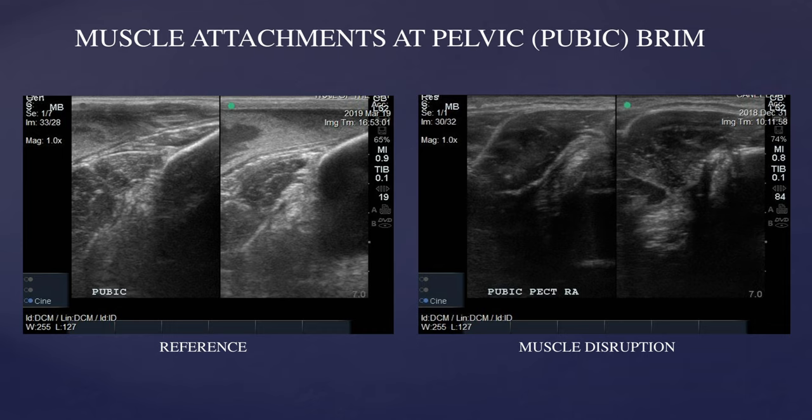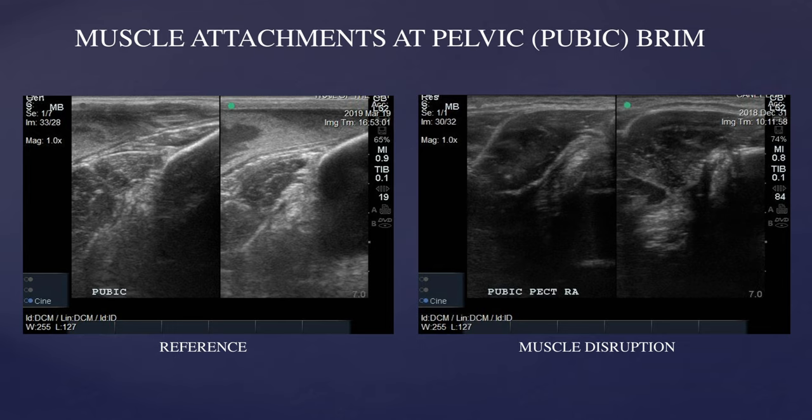Slide eight shows again the normal reference image on the left-hand side and then significant muscle disruption of the rectus abdominis as it inserts on the pubic brim, along with some disruption of the bone surface as well. There is significant enlargement of these attachments as well as significant muscle fiber tearing.